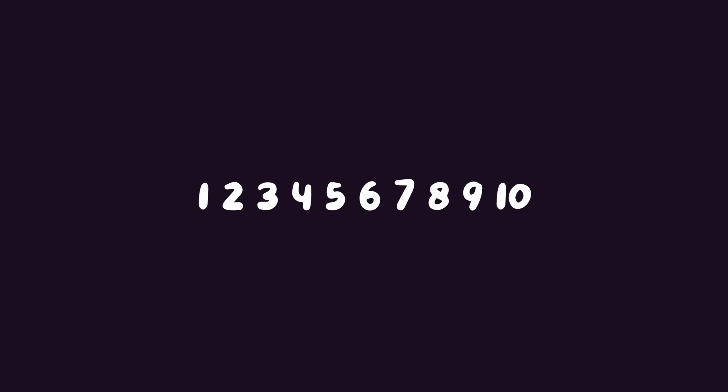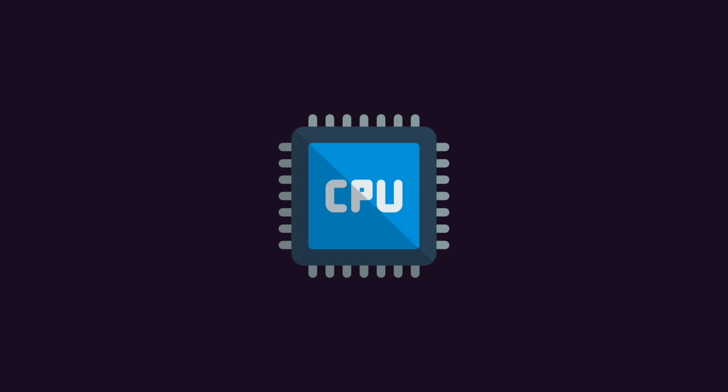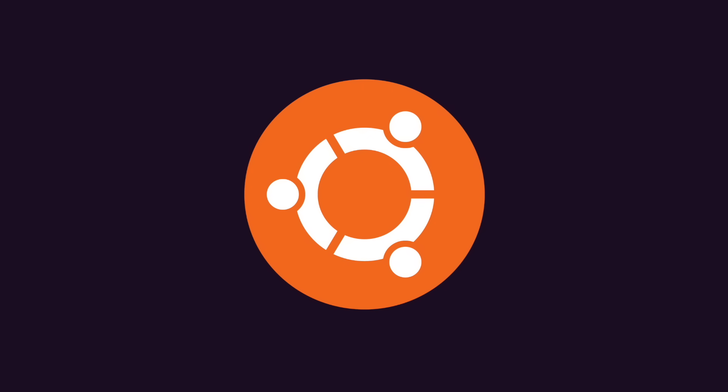Pick a random number between 1 and 10. Go ahead, I'll wait. Pathetic — I knew you would pick 7. Try to be original next time. You know what else is terrible at picking random numbers? The CPU. Sometimes we just need a little help from the operating system — there's just more entropy up there.